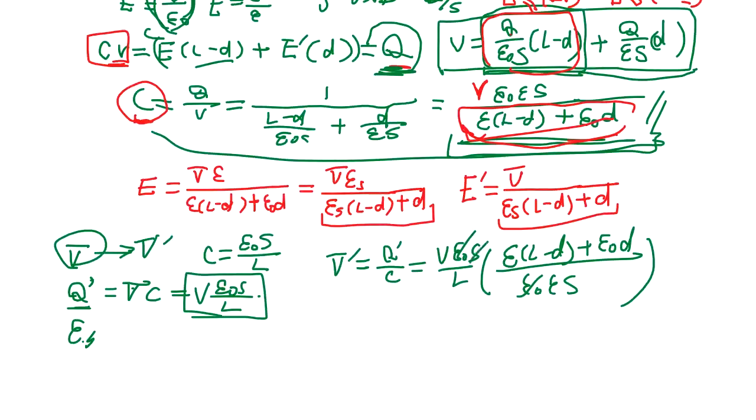So, we cancel out this. So, we will get V, Epsilon L minus D, D over L plus Epsilon D over L. Okay. So, we still have Epsilon here. So, if we divide by Epsilon, it's going to be Epsilon, it's going to be Epsilon S. Okay? Don't forget that.